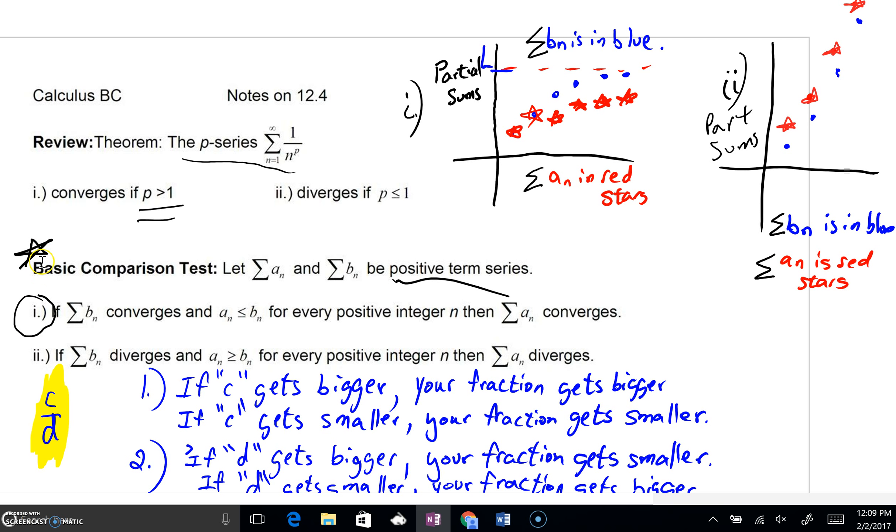Here is part 1: if we can say that series B converges and A sub n is less than B sub n for every positive integer n, so A sub n term by term is smaller than B sub n, the summation of A sub n must converge also.